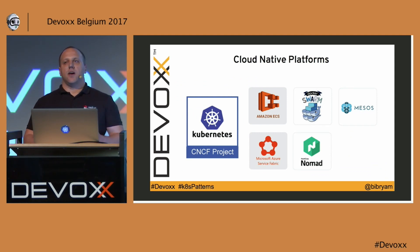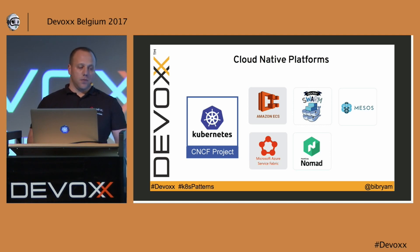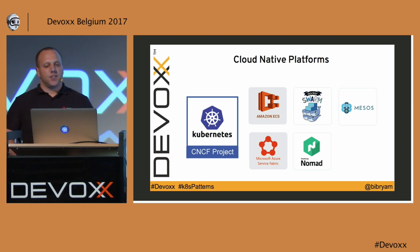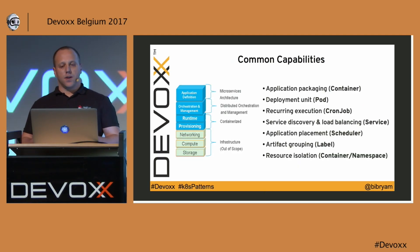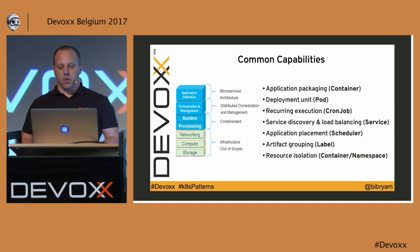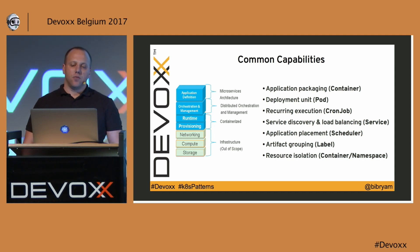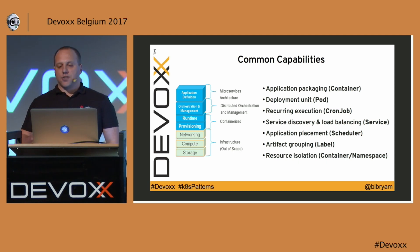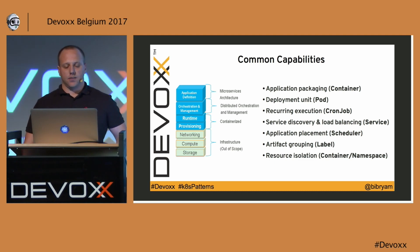Even though the topic is around Kubernetes and Java, most of what we say today applies also to other cloud native platforms and other languages, not only Java. Most of these cloud native platforms nowadays offer similar capabilities for developers. They all work with containers, they have the concept of a deployment unit — which in Kubernetes is a pod — service discovery, load balancing, scheduling, and isolation capabilities.